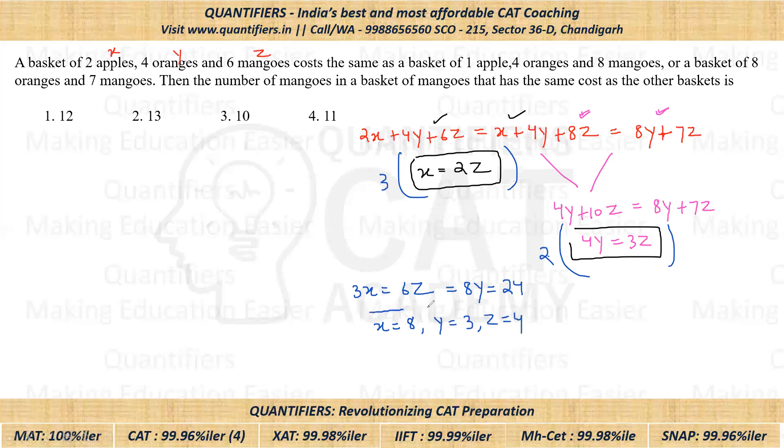From here we can say X's value will be eight, Y's value will be three, and Z's value will be four. So we have the values of X, Y and Z: eight, three and four. This is basically the ratio. Further it is given, how many mangoes will be there in a basket of mangoes which has the same cost as the other basket?